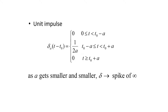Delta sub a of t minus t naught is defined as a piecewise function, where it's 0 if t is between 0 and t naught minus a. It's 1 over 2a if t naught minus a is less than or equal to t, which is less than t naught plus a. And it's equal to 0 if t is greater than or equal to t naught plus a.